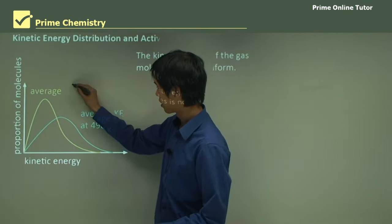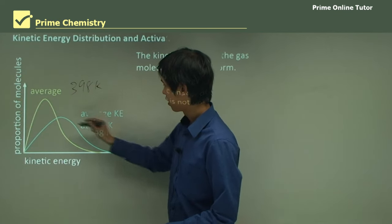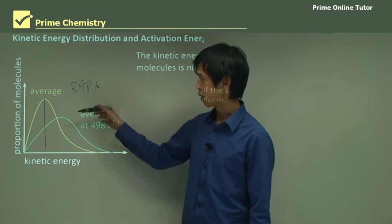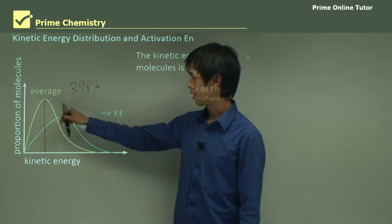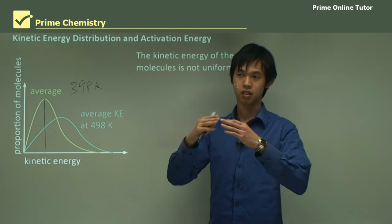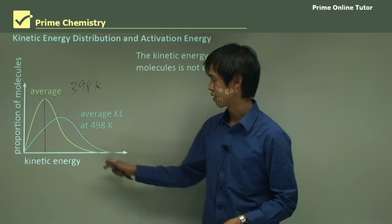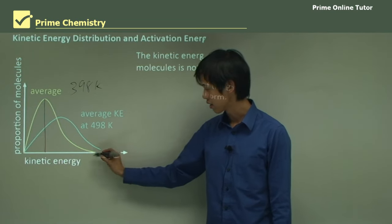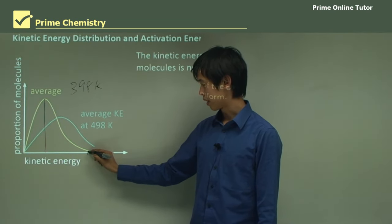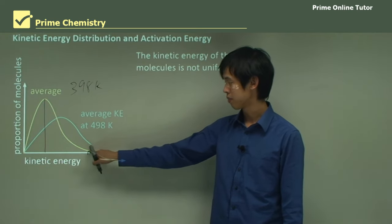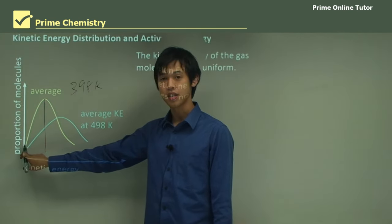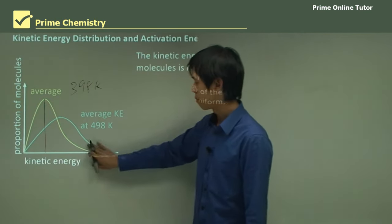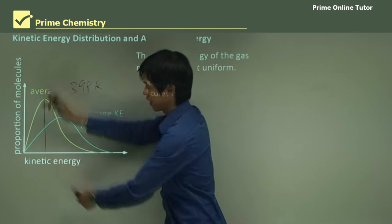For this yellow line, which we'll say is 398 Kelvin, the maximum number of molecules have that speed — we call it the average because it's the center point of this distribution. You can see that there are fewer molecules at very high energies. Likewise, at very low speeds, there are not many molecules traveling there either. The majority tend to accumulate around this middle speed.